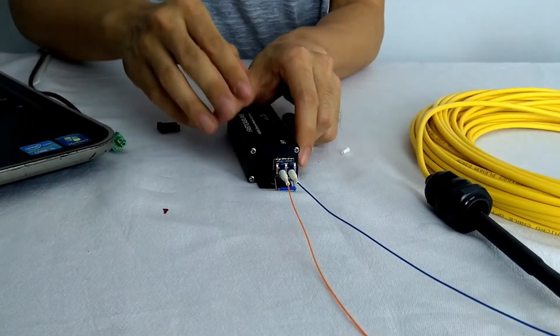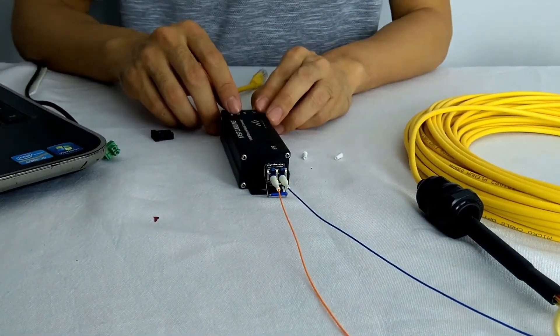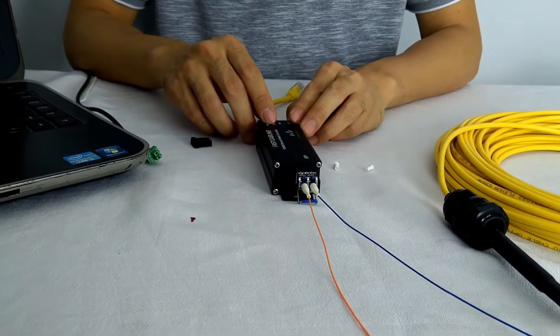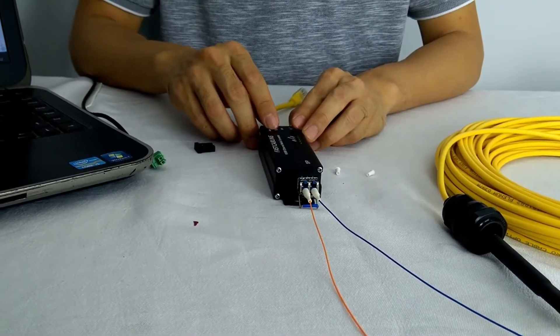One thing important: if we are using the orange on the right on this side, on the other side we will need to put the orange on the left, because the transmitting is always working with the receiver.